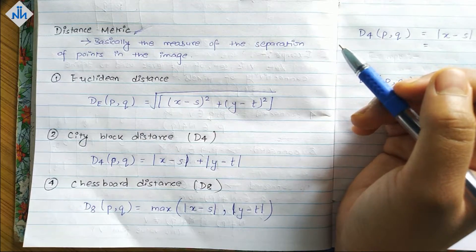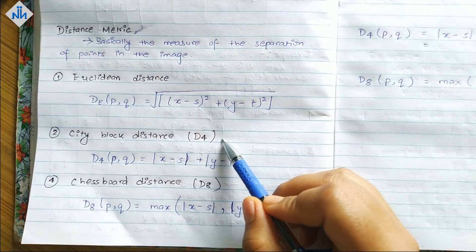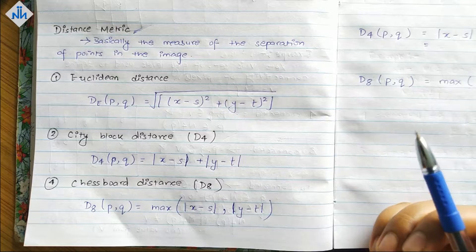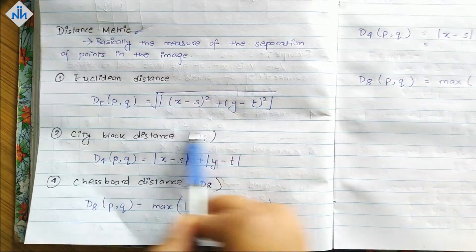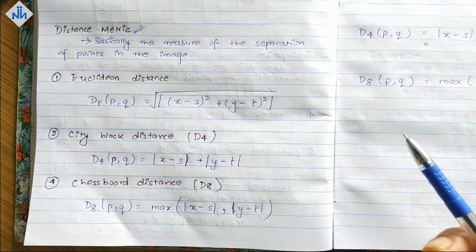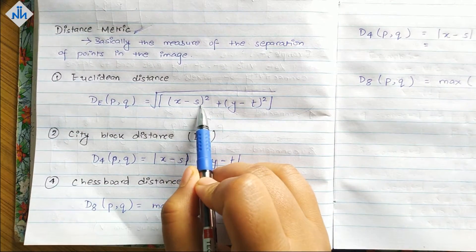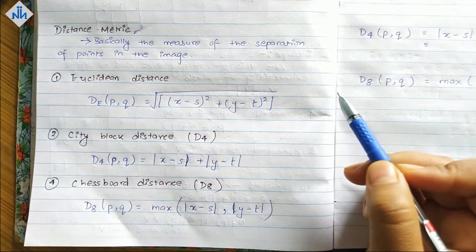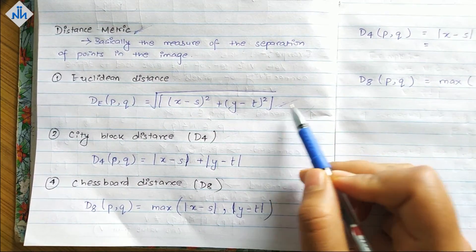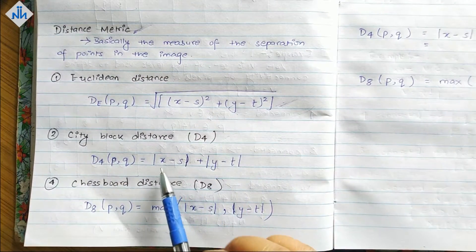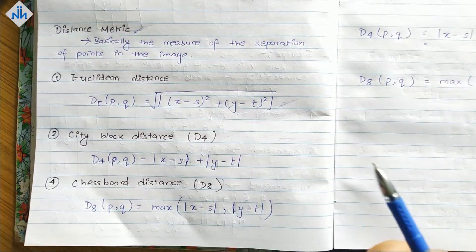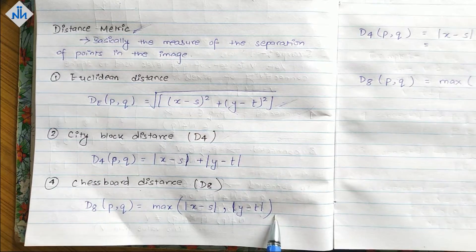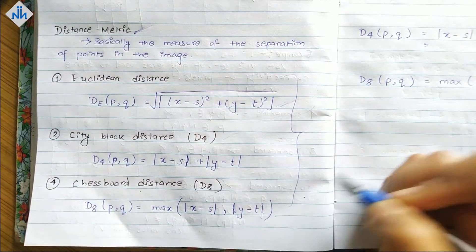There are three major ones which we are going to discuss: Euclidean distance, City block distance or D4 distance, and Chessboard distance or D8 distance. The Euclidean distance formula is the normal formula for distance that we use in coordinate geometry: square root of (x minus s) whole square plus (y minus t) whole square. City block distance is |x minus s| plus |y minus t|, and chessboard is max of |x minus s| and |y minus t|. In different cases we will have to use different distances.